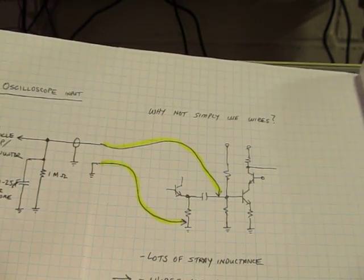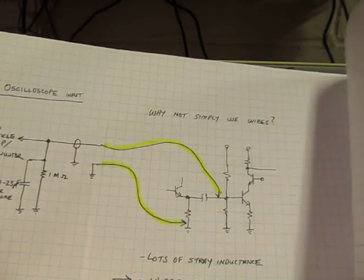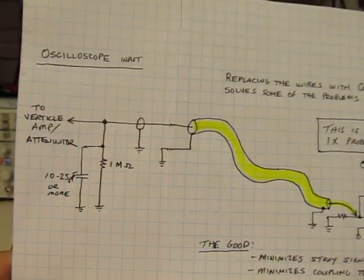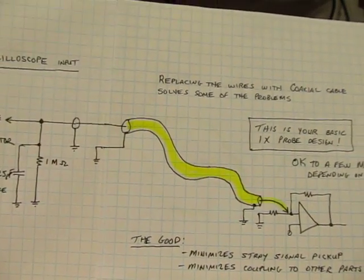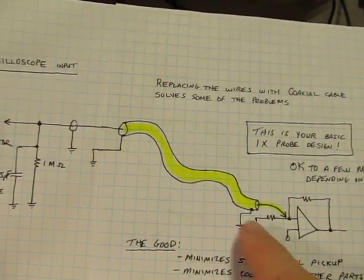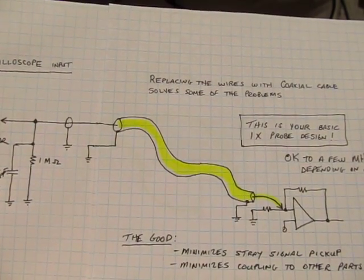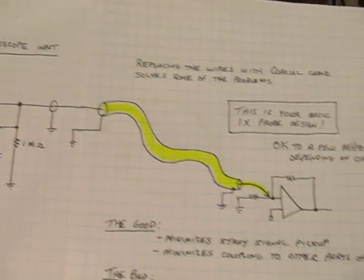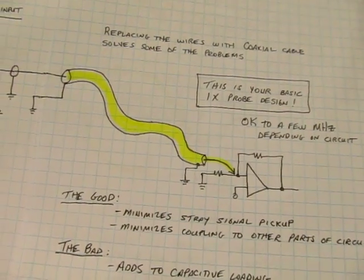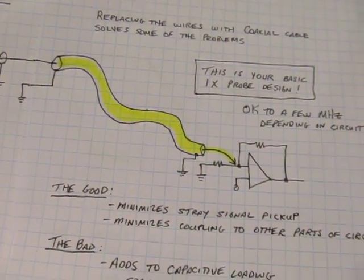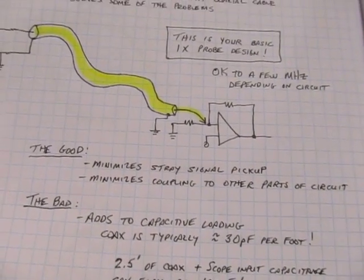So another way around that is, well, let's make these wires shielded, use a piece of coax. And if we do that, so now we can wind up with this situation here. And this actually solves some problems, because now that the signal wire is shielded by ground, we're not going to be picking up a lot of signals, so that's good. We're going to minimize coupling to other parts of the circuit, so that's good. But what's bad about this? Well, it adds a lot of capacitive loading.